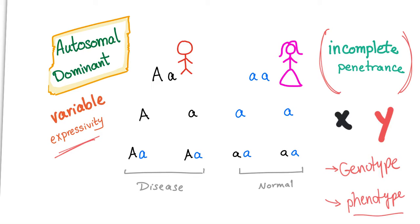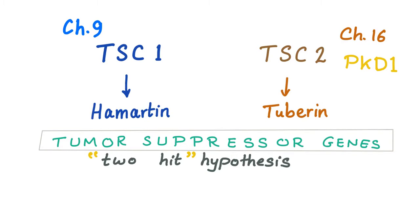So tuberous sclerosis is autosomal dominant with variable expressivity and some degree of incomplete penetrance. Genetically, there are two genes responsible: TSC1 and TSC2. TSC stands for tuberous sclerosis. TSC1 is on chromosome 9 and expresses a protein called hamartin. TSC2 is on chromosome 16 and expresses a protein called tuberin.